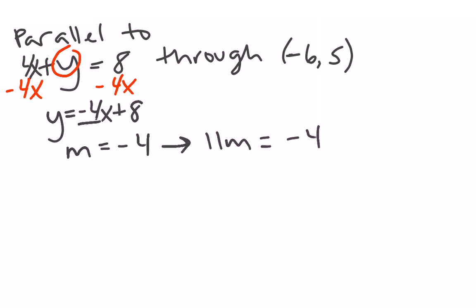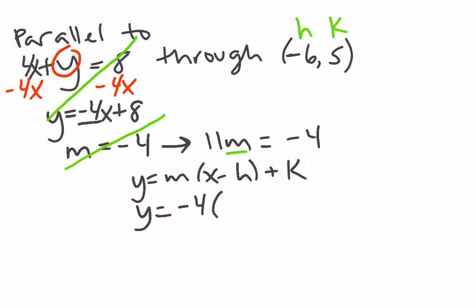Now none of this old stuff matters, and the reason I'm kind of crossing it out is because otherwise people will start trying to use that later. Here's my h and my k and my new slope. So we're going to use y equals m x minus h plus k. So y equals, my slope is negative 4x minus means opposite. Opposite of negative 6 is going to be positive 6. Keep k, so keep positive 5.